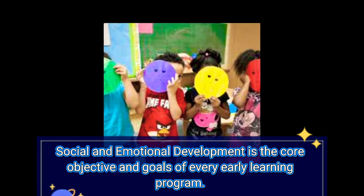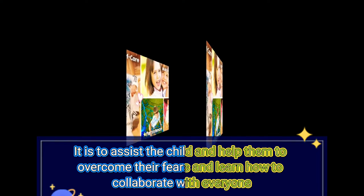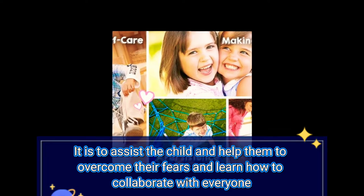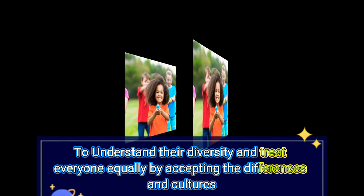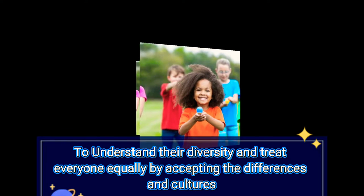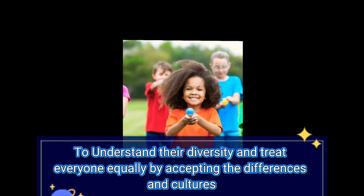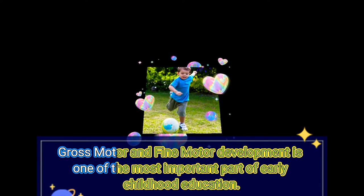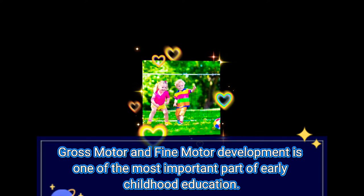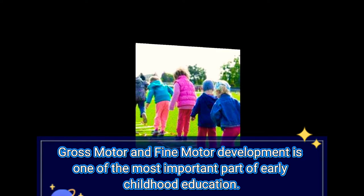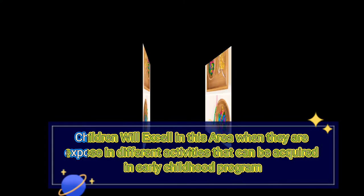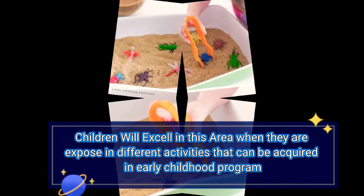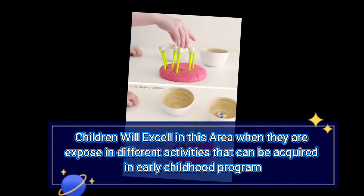Social and emotional development is the core objective and goal of every early learning program. It assists the child in overcoming their fears and learning how to collaborate with everyone. This curriculum helps children understand diversity and treat everyone equally by accepting differences and cultures. Physical development, gross-motor, and fine-motor development is one of the most important parts of early childhood education, and most children excel in this area when exposed to different activities acquired in early childhood programs.